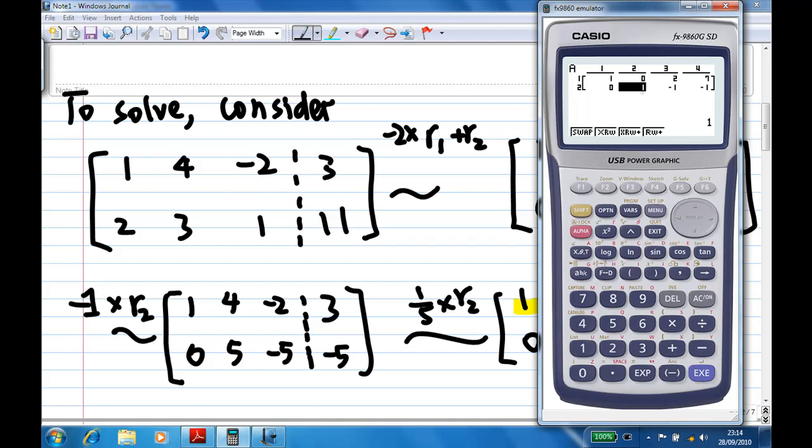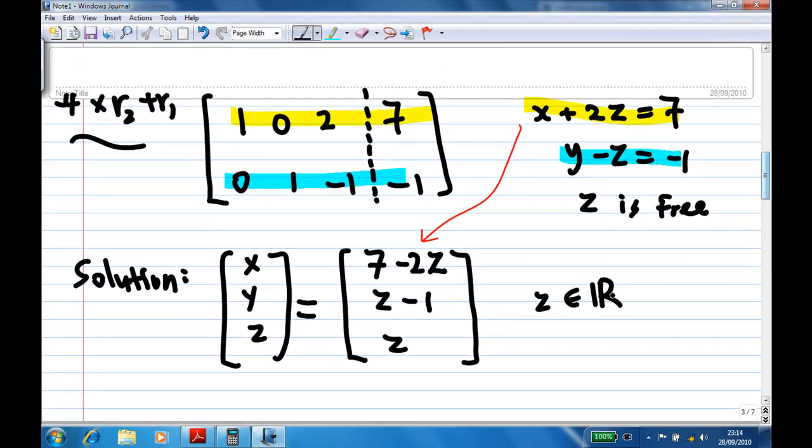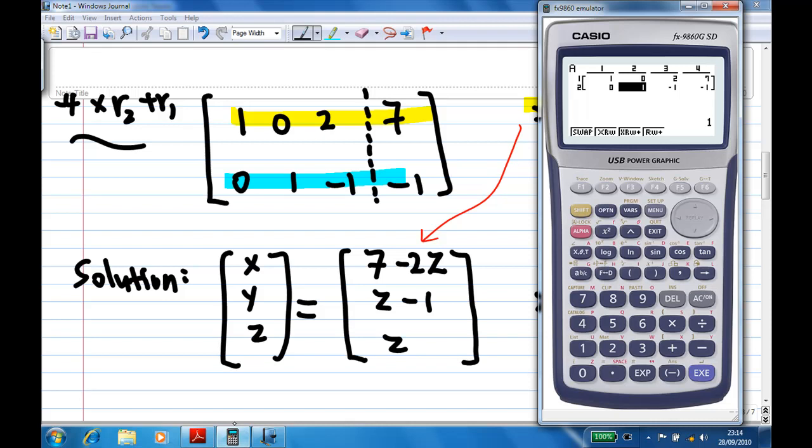From here I get x plus 2z equals 7, y minus z equals minus 1, which agrees with the calculation I have. That's the end of the recording.